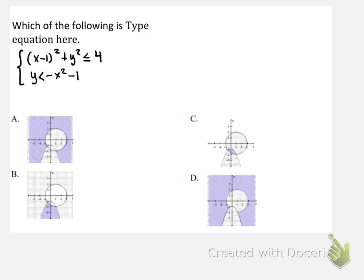So this is a system of equations, and this first one is a circle, because it's in the form x squared plus y squared is less than or equal to the radius squared.